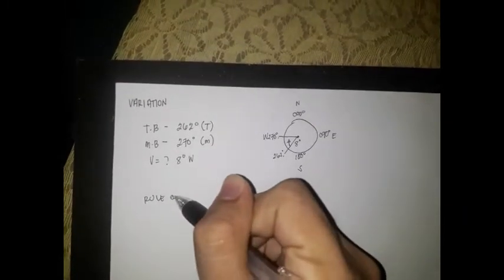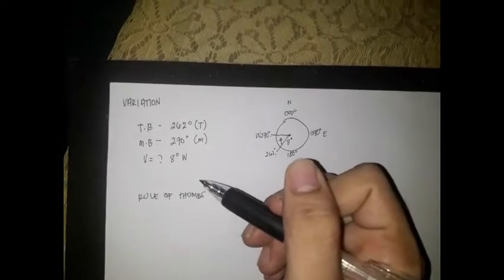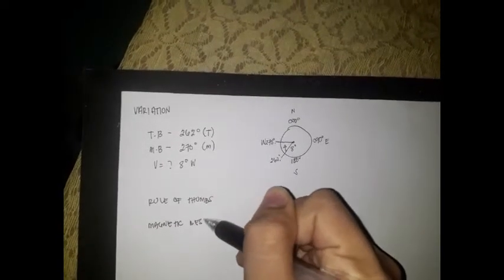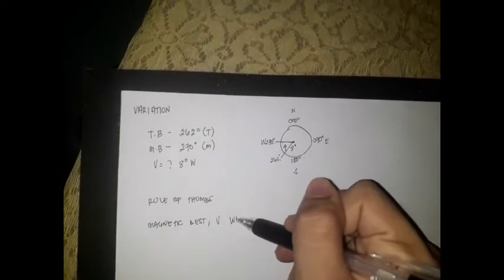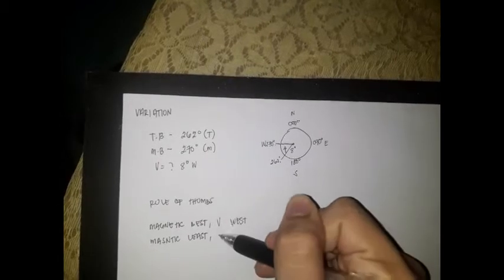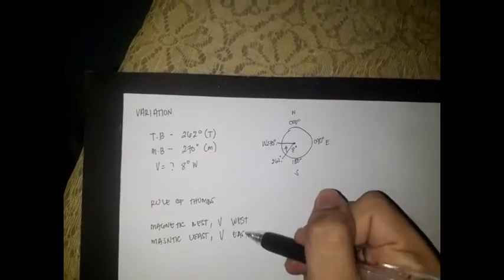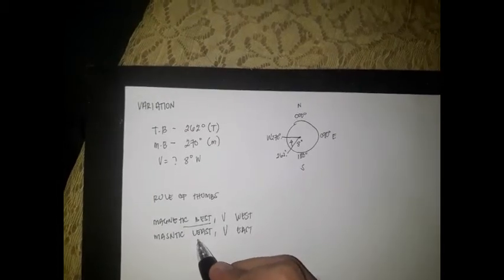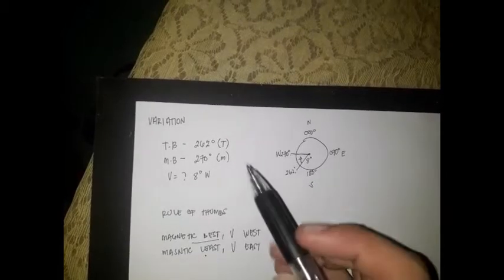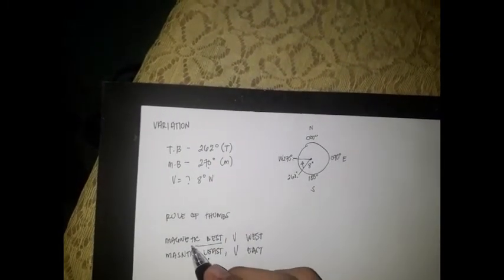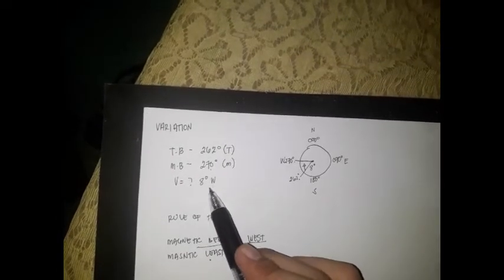Why west? Using the rule of thumbs: magnetic best, variation west; magnetic west, variation east. In our case, our magnetic bearing is greater than our true bearing, so magnetic best means variation west. That is why we named it west.